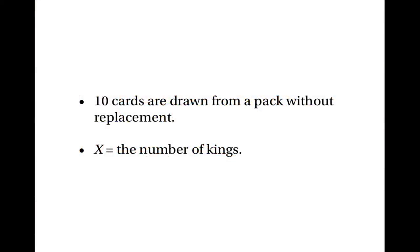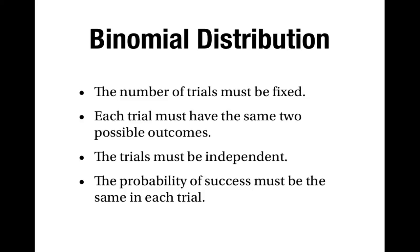My next example has to do with cards. Suppose that we draw ten cards at random from a pack but don't replace them, and X is the number of kings. The number of trials is fixed because we take ten cards, and each trial does have the same two possible outcomes — each time we can either get a king or some other card.